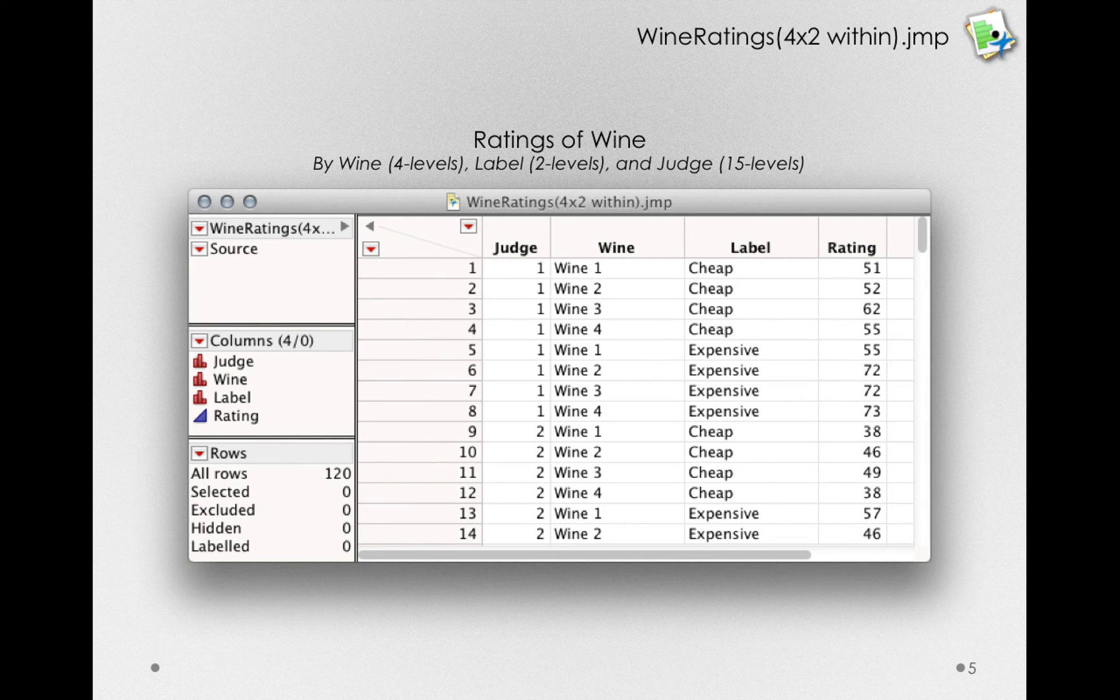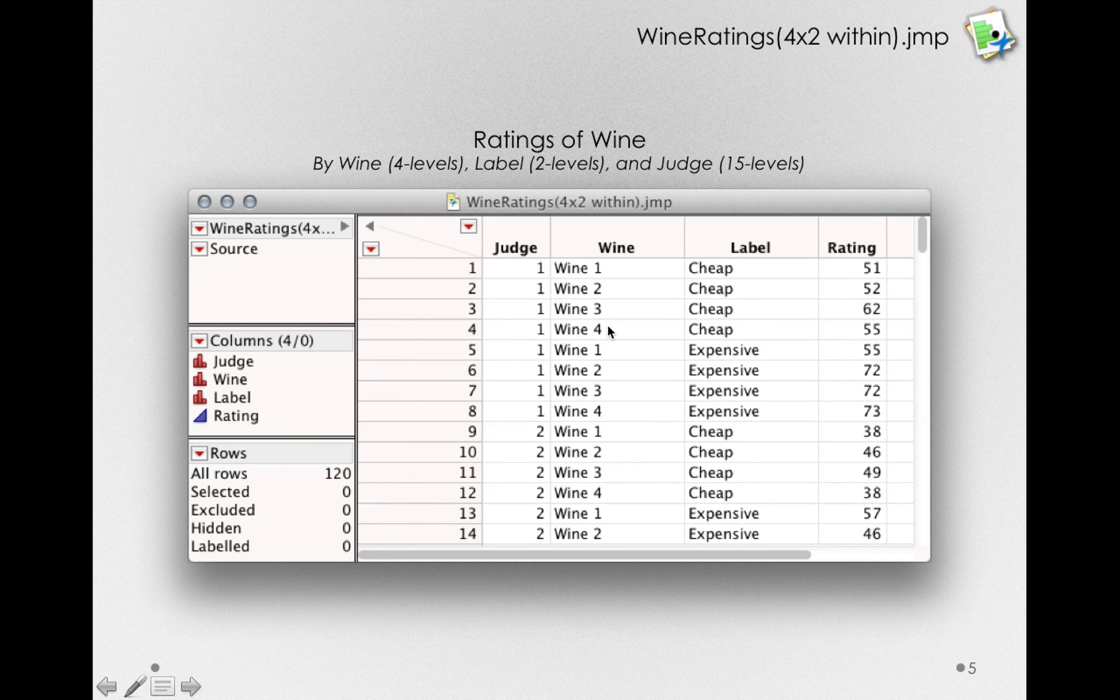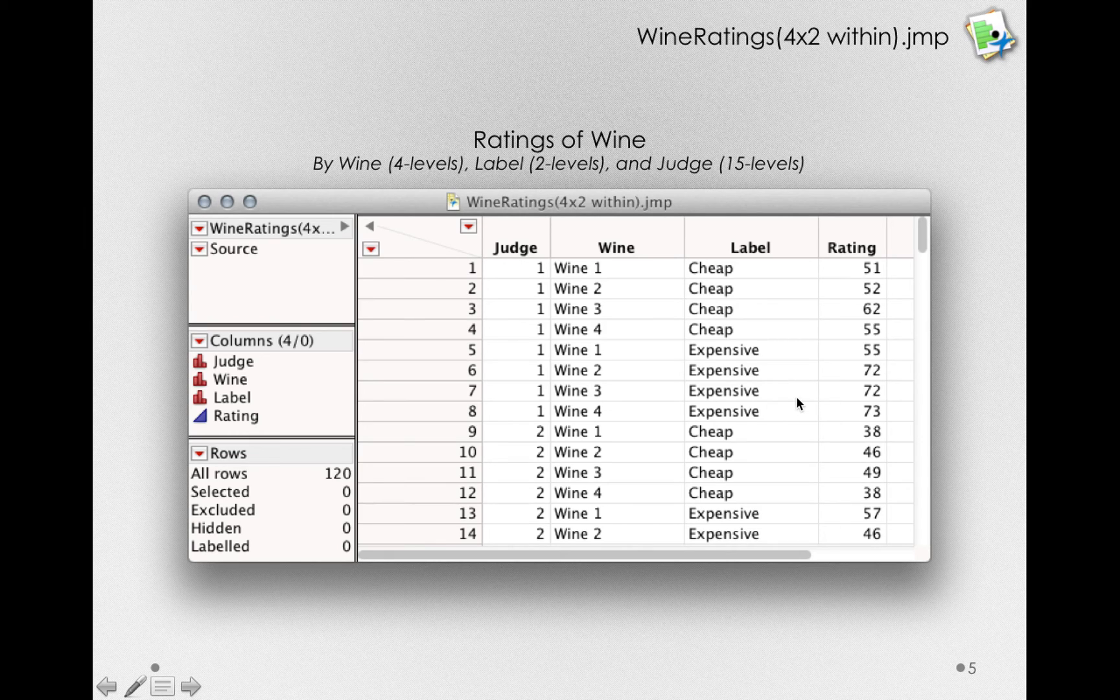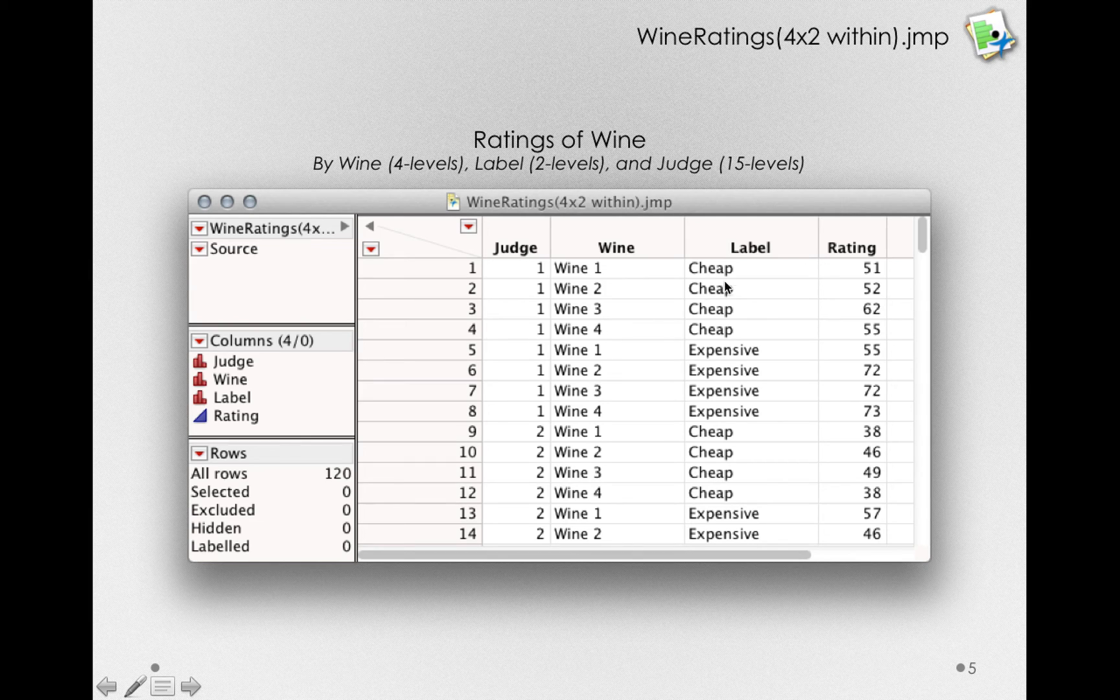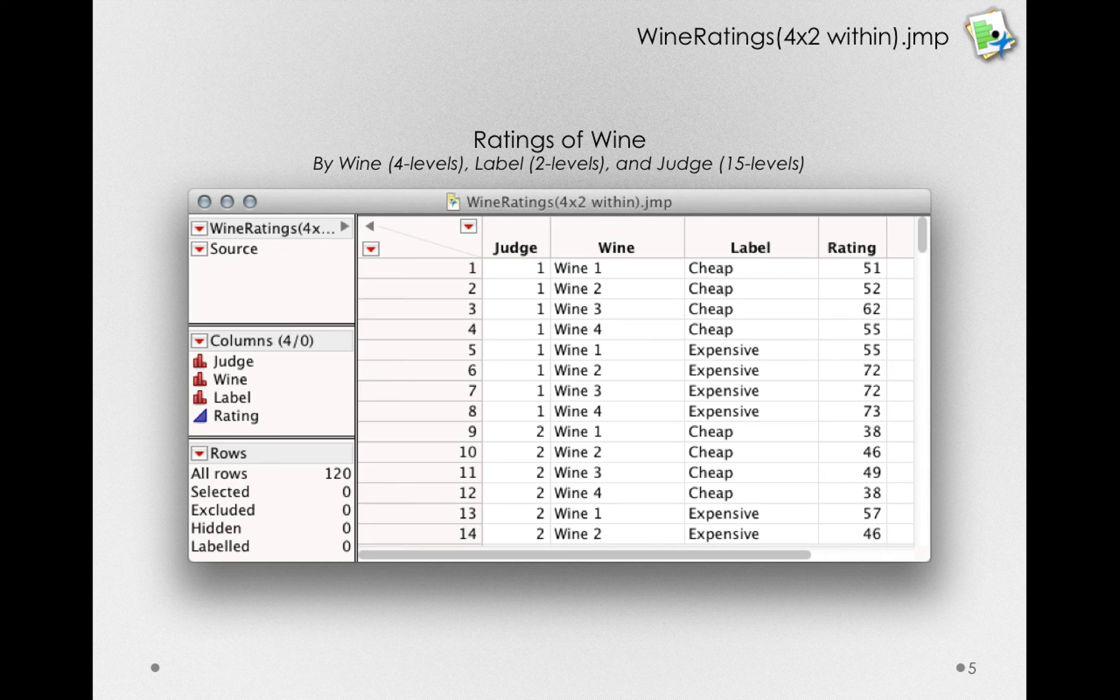Now, the dataset we'll be working with will be a modification to the wine rating dataset we saw before. But in this case, we actually have each subject rate eight different wines. So, four different wine types, but some of the wines will be labeled as cheap wines and some as expensive wines. Notice that this design is a full factorial design. So, each of the different wine types will be labeled once as cheap and once as expensive. Now, we'll randomize the order for each subject. That'll be important in terms of our methodology. But notice that what we can obtain statistically is an estimate of whether individuals actually rate wines better or worse depending on how they're labeled.